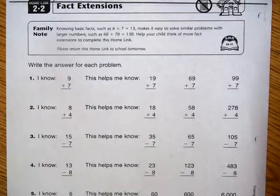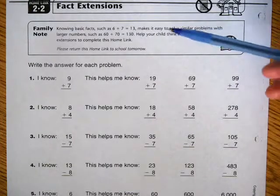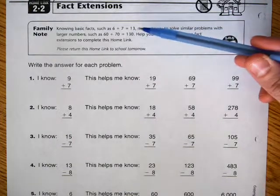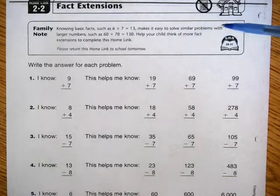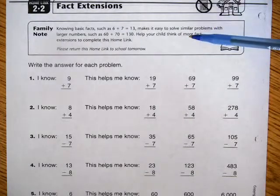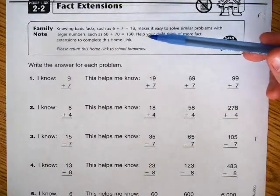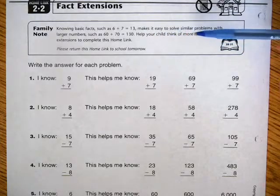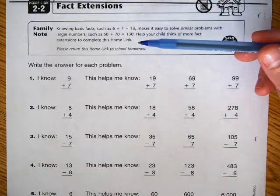This is Homelink 2-2, Fact Extensions for Grade 3 Everyday Math. Knowing basic facts, such as 6 plus 7 equals 13, makes it easy to solve similar problems with larger numbers, such as 60 plus 70 equals 130. Help your child think of more fact extensions to complete this Homelink.